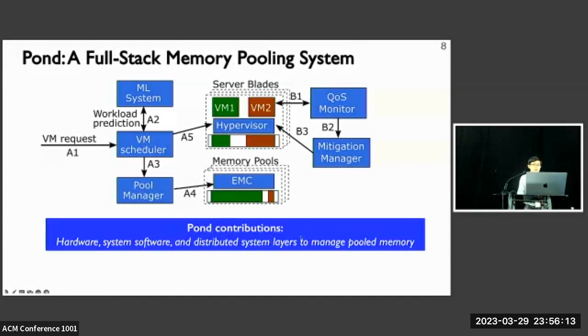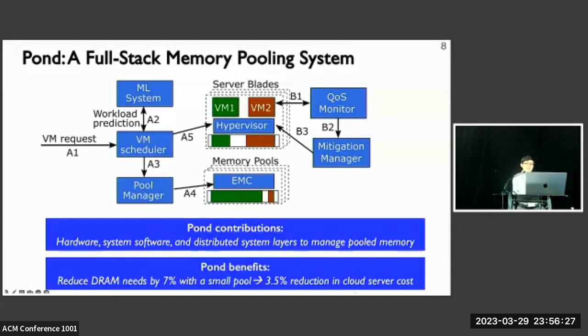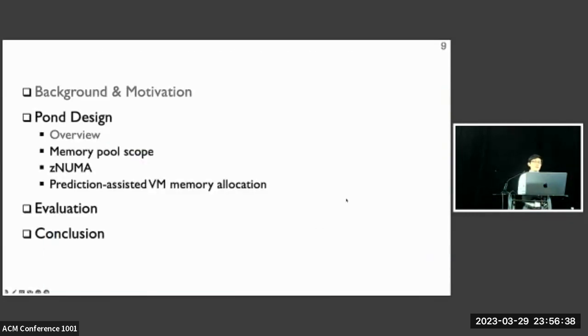Overall, Pond contributions lie in the feasible external memory controller, system software, and distributed system layers to help us better manage the pooled memory. Pond can reduce the DRAM needs by 7% with a small pool design, which can be directly translated into 3.5% reduction in cloud server costs. Now, in the rest of the talk, I'm going to briefly go through some key design aspects of Pond and then share some evaluation results and conclude.